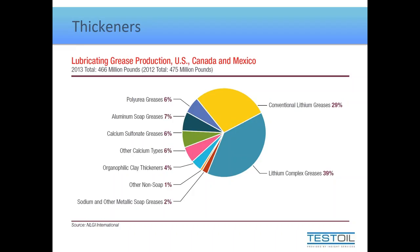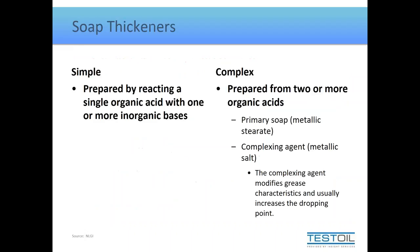The difference between a conventional or 'simple' grease and a 'complex' grease: a simple grease is prepared by reacting with a single organic acid, while a complex grease is created by reacting at least two organic acids — a primary soap and a complexing agent. This complexing agent enhances some grease properties, most notably the dropping point.